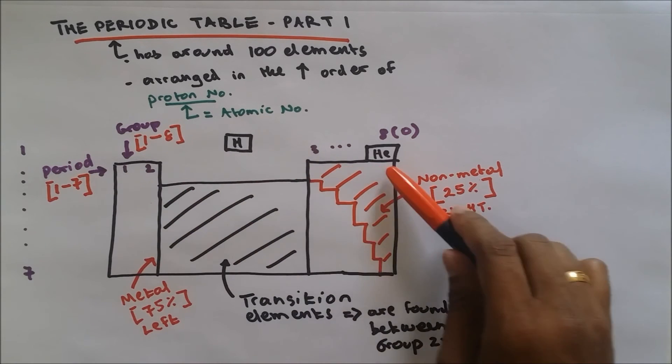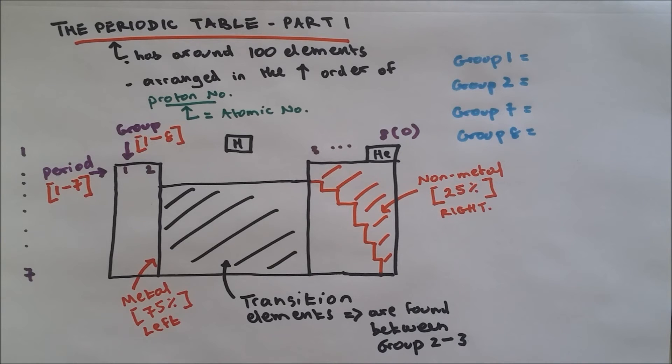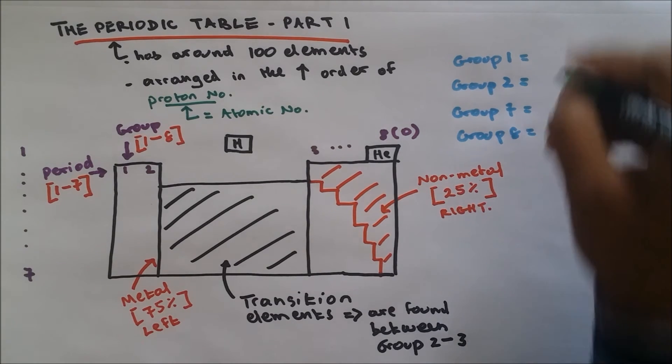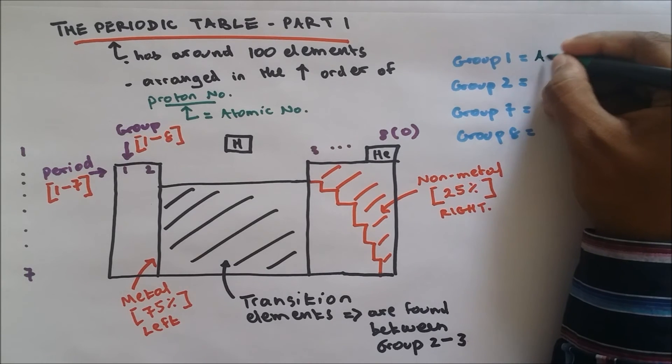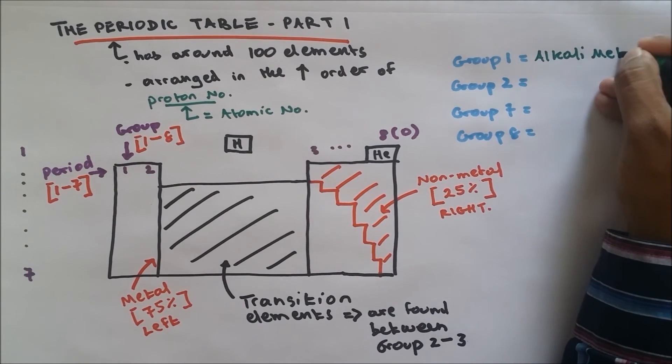Elements across the period don't have a specific name, but certain elements in a group have specific names. Group one is called alkali metals.